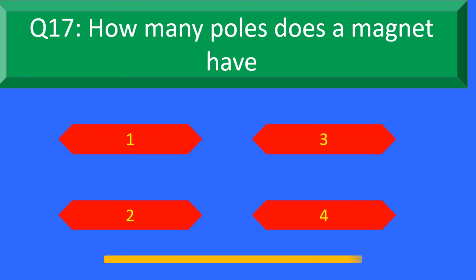And your time is up. The right answer is Option C: 2. A magnet has two poles.